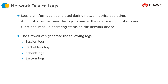Packet loss logs are generated when the firewall discards a packet. This log also contains the packet discarding cause. Service logs include threat, content, policy matching, mail filtering, URL filtering, and audit logs. System logs contain operating information of functional modules of the firewall.